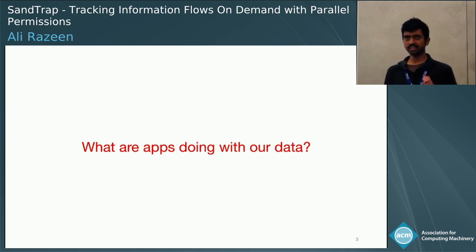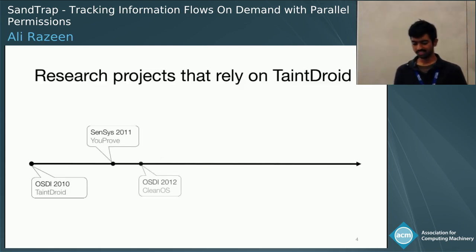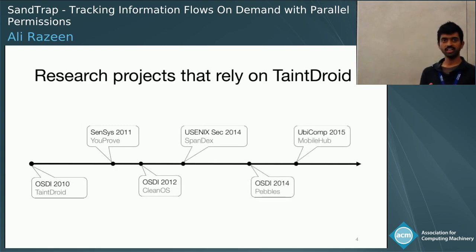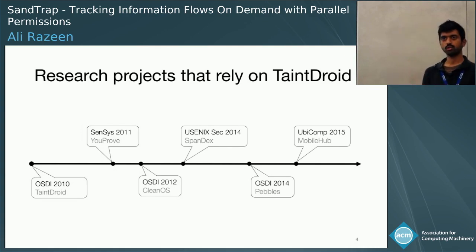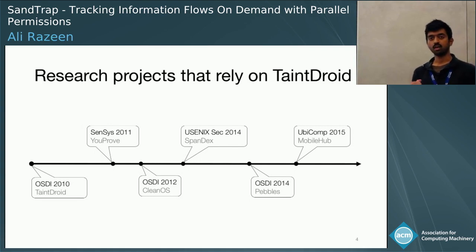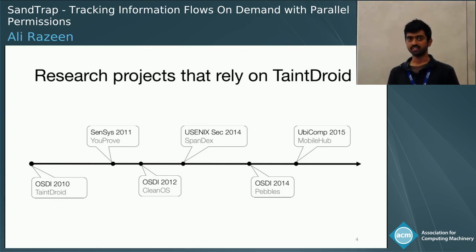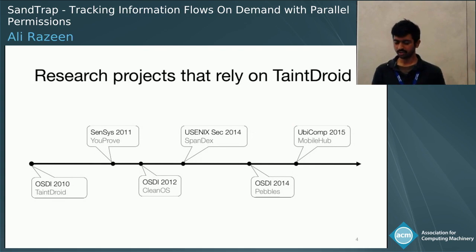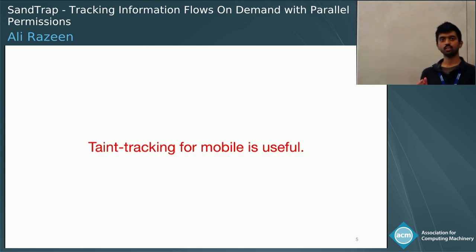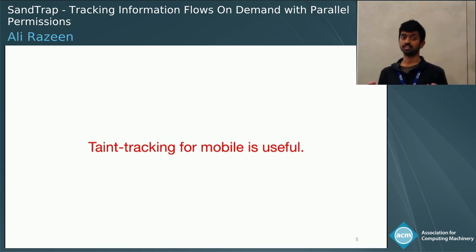Something interesting has happened since TaintDroid's publication. We have seen a lot of research papers use TaintDroid creatively as building blocks for some other higher level service. Mobile Hub, for example, uses TaintDroid to track an app's access patterns to sensor data on the device, and makes use of that information to minimize the app's impact on the device's battery life. So taint tracking is a useful primitive for mobile services, some of which have absolutely nothing to do with privacy and security.